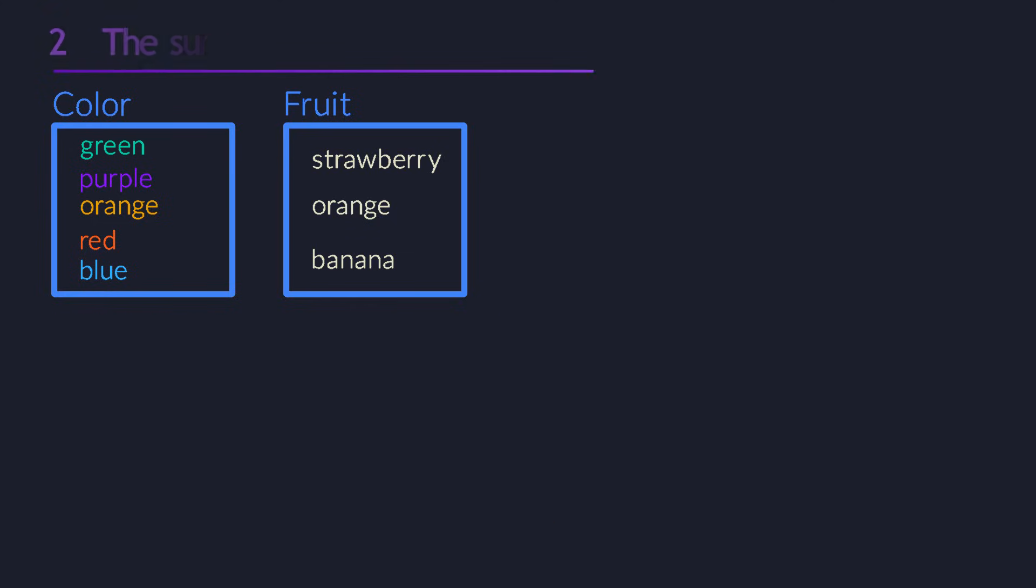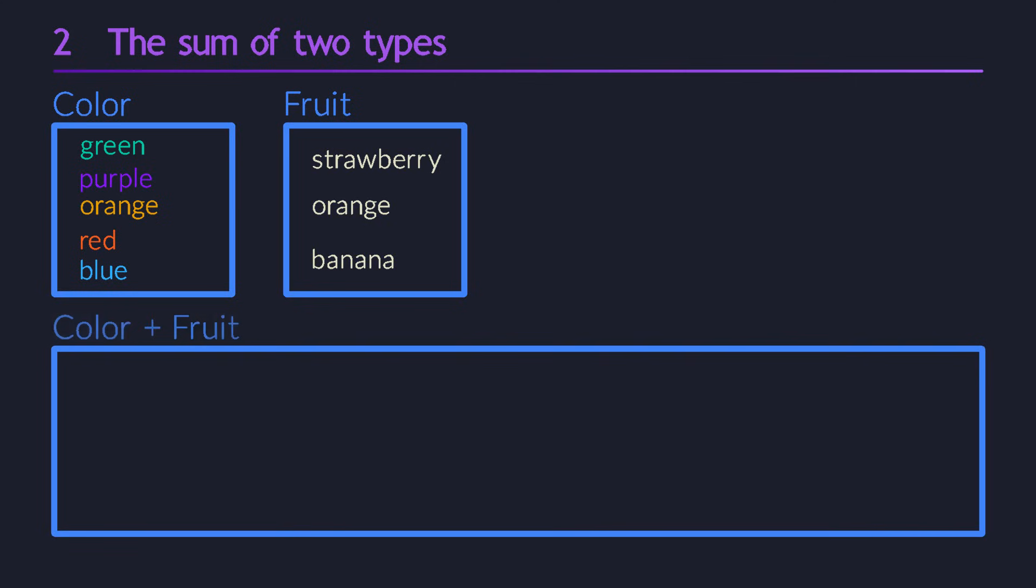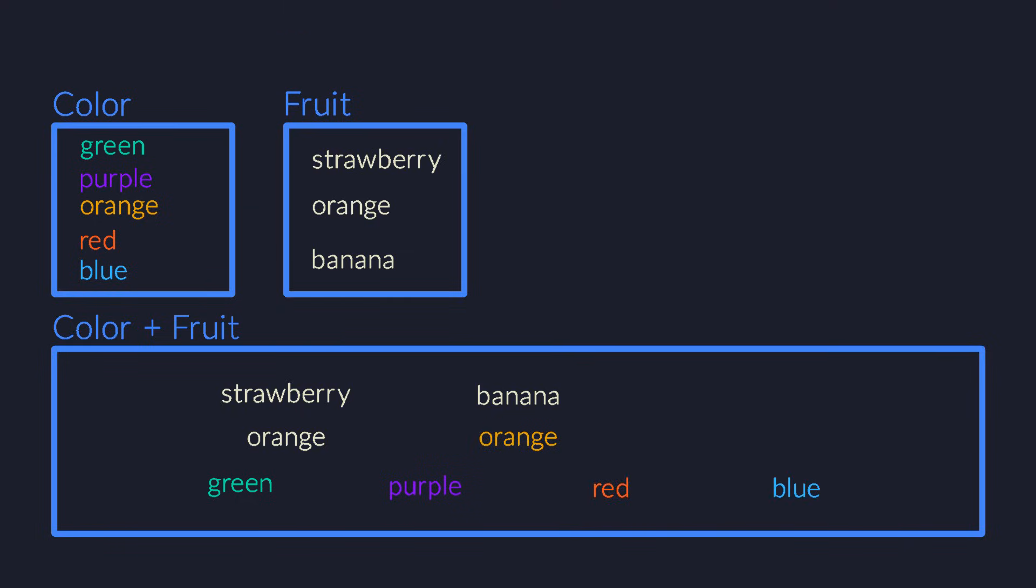A pair contains a color and a fruit. But it's also very useful to define a type that contains a color or a fruit. This is called the sum type. You can think of it as the union of the two sets. So the resulting set has all the values from both sets. But there is a small catch.